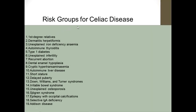The risk groups for celiac disease include: first-degree relatives of the patient; dermatitis herpetiformis patients; unexplained iron deficiency anemia; autoimmune thyroiditis; type 1 diabetes — we screen type 1 diabetic patients for celiac disease; dental enamel hypoplasia; autoimmune liver disease; short stature; late puberty; Down, Williams, and Turner syndromes; selective IgA deficiency; and Addison's disease — quite a long list.